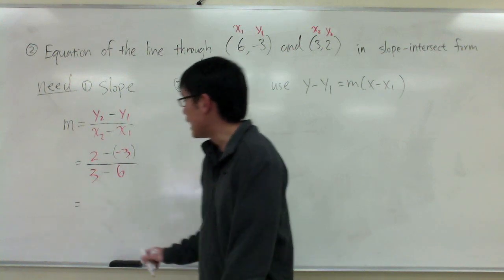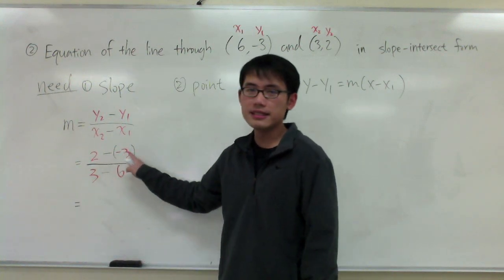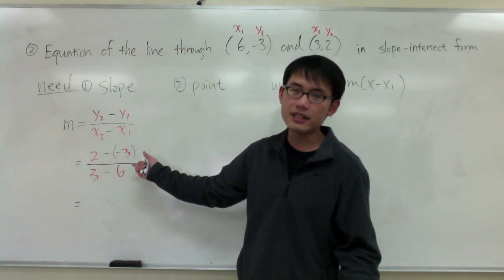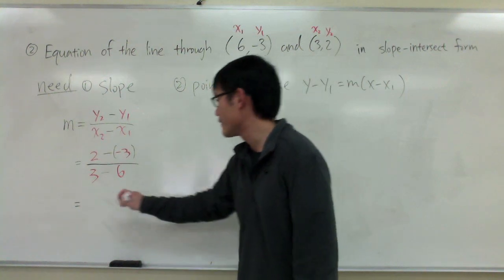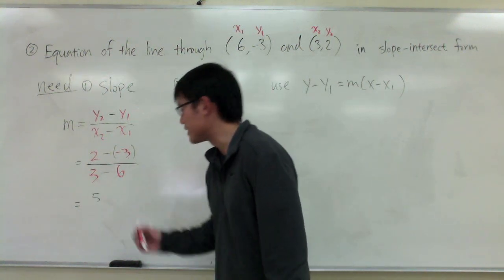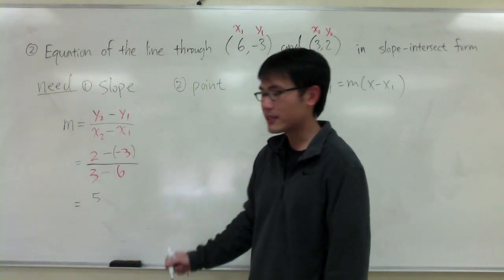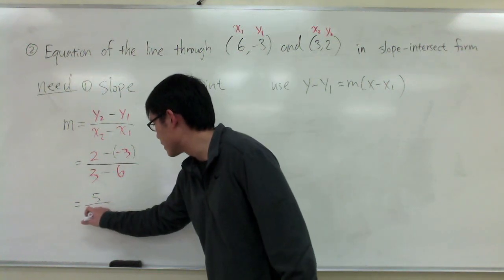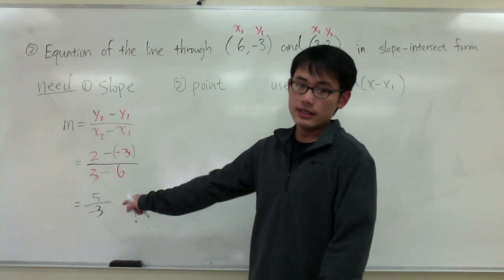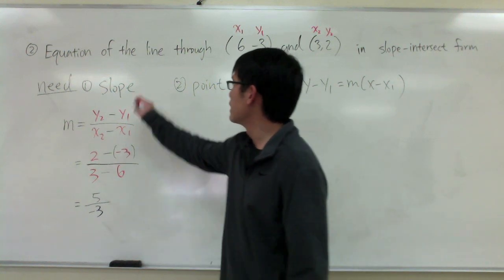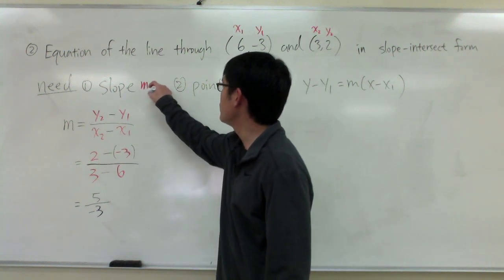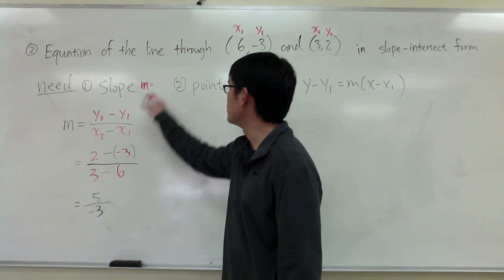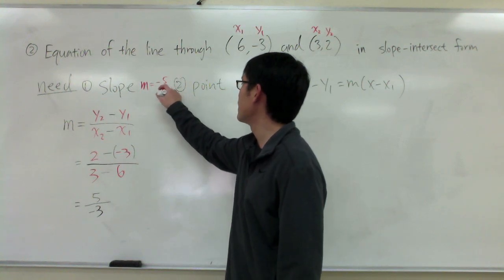And now this is the calculation that I need to do to get the slope. Let's see. On top, I have 2 minus negative 3. It's the same as saying 2 plus 3, which will get 5, positive 5. And on the bottom, we have 3 minus 6. We will get negative 3. So that's the slope that we are going to use. Slope will be m is equal to negative 5 over 3.